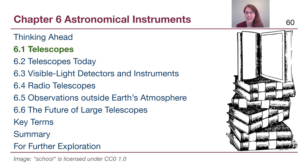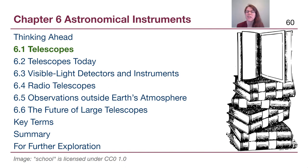Welcome to Chapter 6 in OpenStax Astronomy. In this chapter we'll be talking about telescopes — both the terms used to describe different types of telescopes, as well as some of the innovations in modern telescopes that astronomers currently use. In this particular video we'll be introducing ourselves to some of the key concepts, and then in the second video we'll discuss some of the other highlights from this chapter.